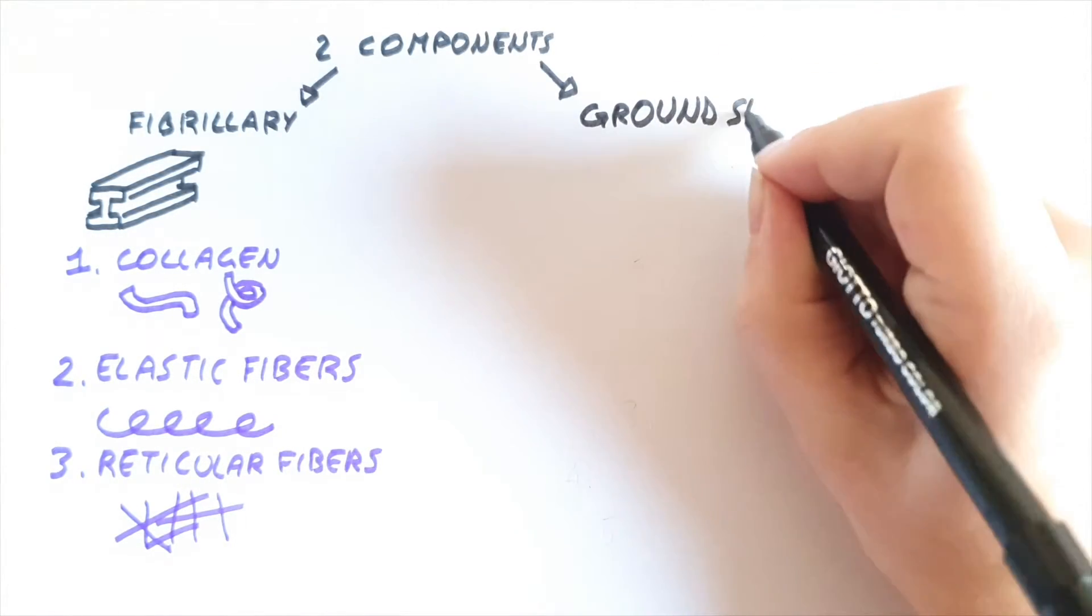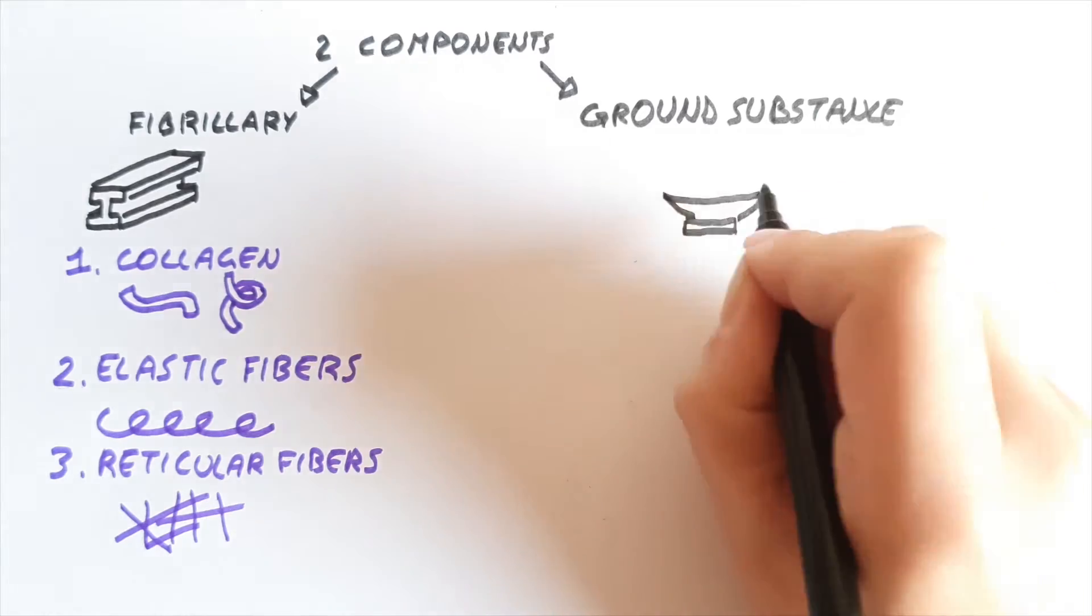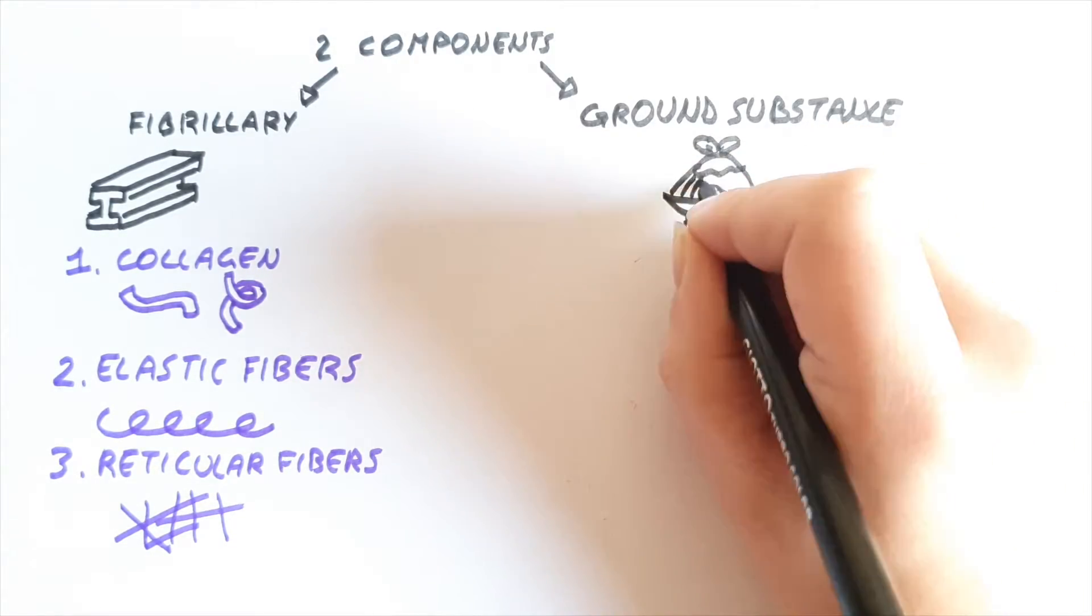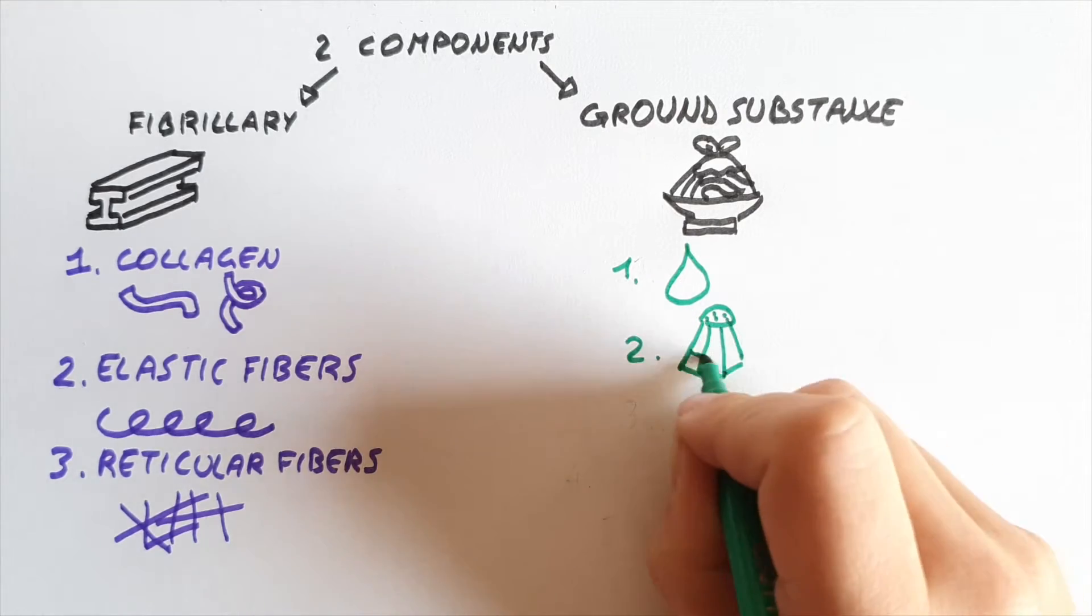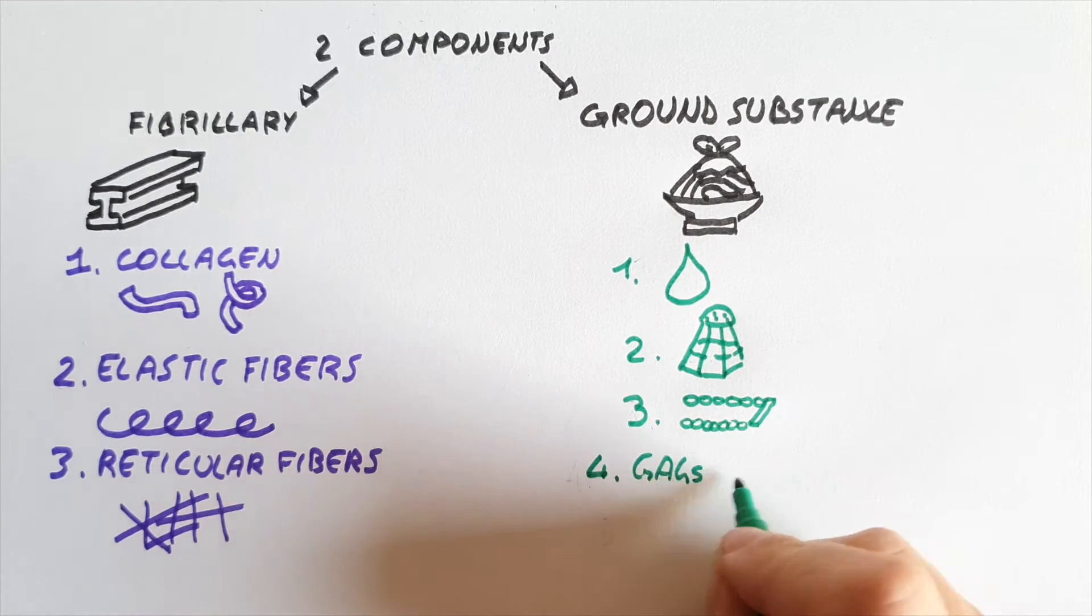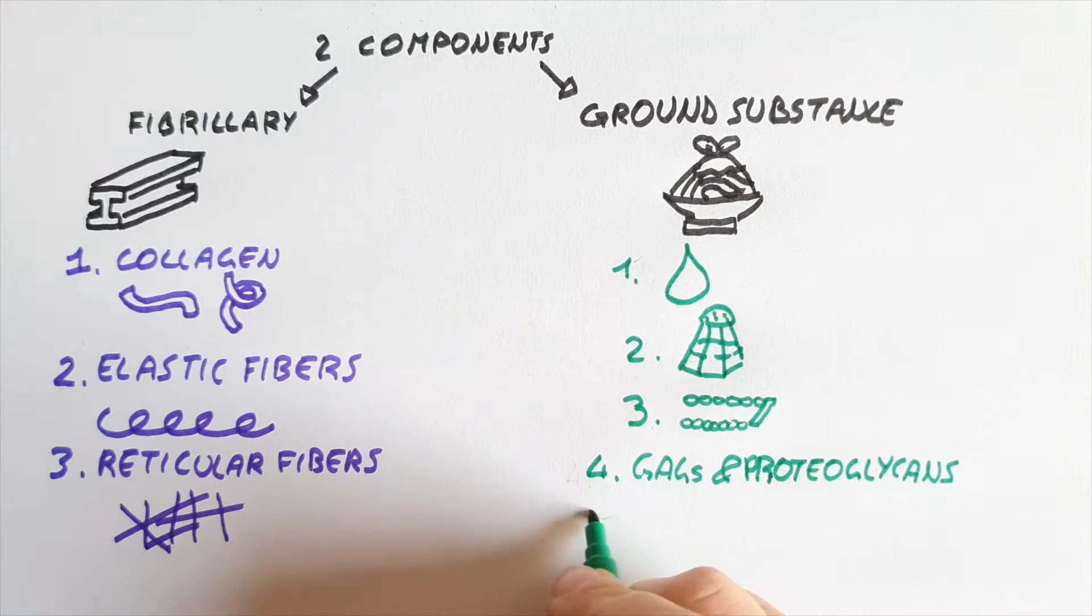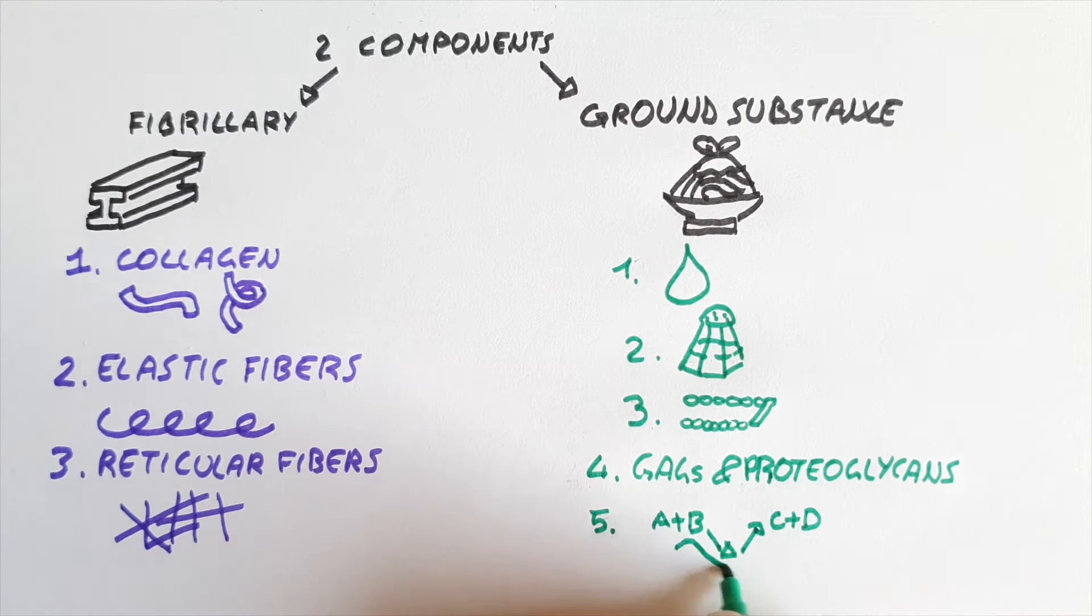While the ground substance is the most abundant component, it contributes to the spread of substances from capillaries to tissue cells. It is composed of water, electrolytes, glycoproteins, GAGs, proteoglycans, and enzymes.